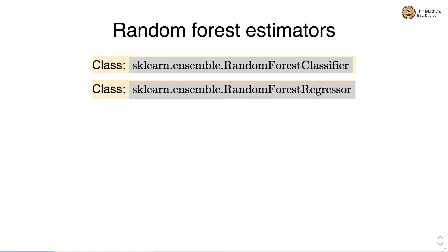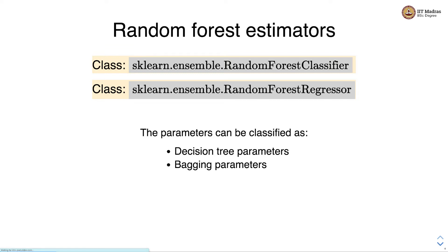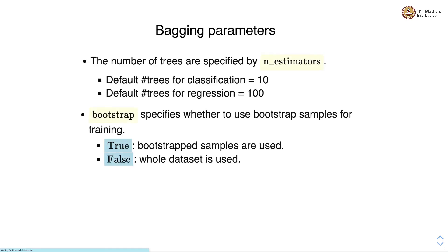Then we have random forest estimators — two estimators: random forest classifier for classification and random forest regressor for regression. They are also implemented as part of the sklearn.ensemble module. The parameters of random forest can be classified as decision tree parameters and bagging parameters. For bagging parameters, the number of trees is specified by n_estimators. The default number of trees for classification is 10, and for regression is 100. The bootstrap flag specifies whether to use bootstrap samples for training — when true, bootstrap samples are used; when false, the whole dataset is used.